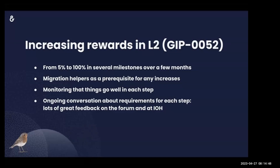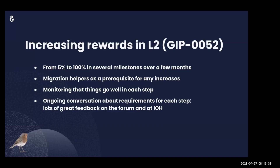Regarding increasing rewards on L2: it goes from 5% to 100% in several milestones over a few months. Migration helpers are a prerequisite for any increases — the first bump will not happen before migration helpers for all participants are released. We'll monitor that things go well at each step and reset the timeline if anything goes wrong. There's going to be an ongoing conversation about requirements for each step — we've had lots of great feedback on the forum and at indexer office hours, and we'll keep discussing before doing any of these steps.